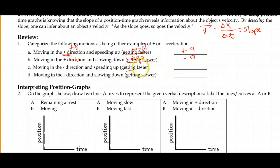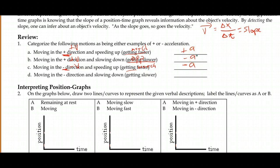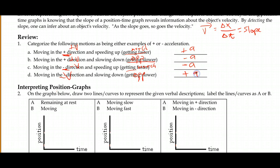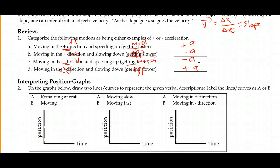When getting faster in the negative direction, we need a match: the velocity is negative, so we need negative acceleration. Notice we are getting faster and still have a negative acceleration. For our last case, getting slower in the negative direction requires opposites: we have a negative velocity, so we must have a positive acceleration — and that means slowing down.